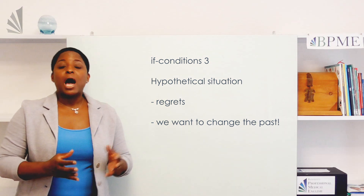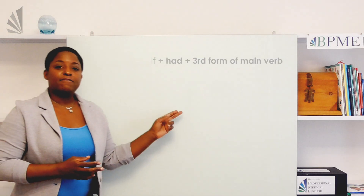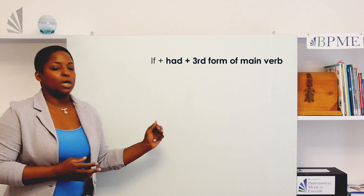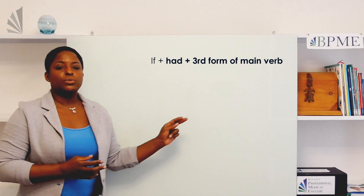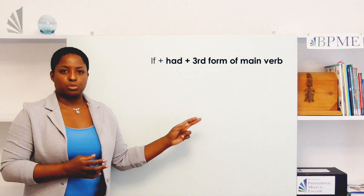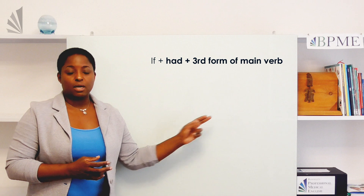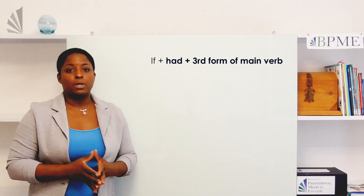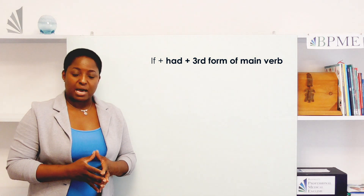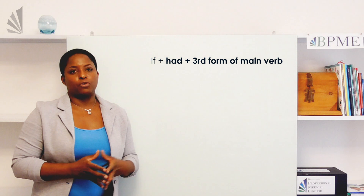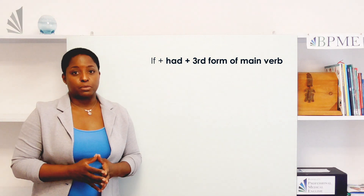So how do we form if three? In the if part of the clause, we use the past perfect — that is the past tense of the verb 'to have': had, and the third form of the verb.